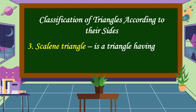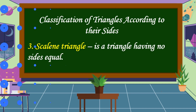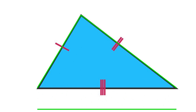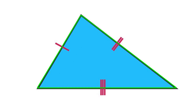A scalene triangle is a triangle having no sides equal. This is an example of a scalene triangle — the three sides are not equal.